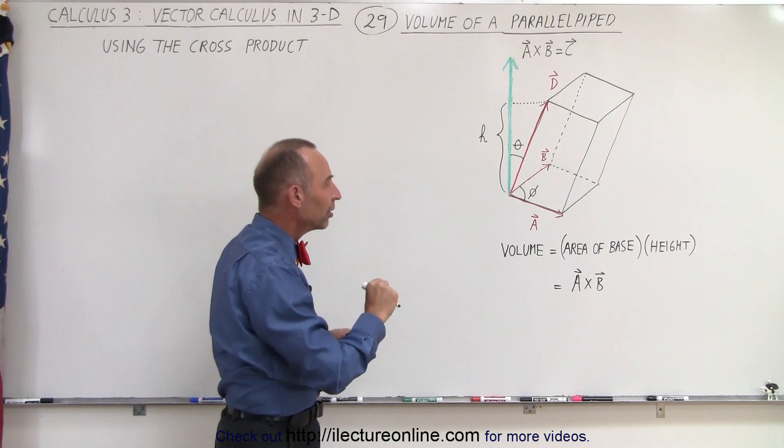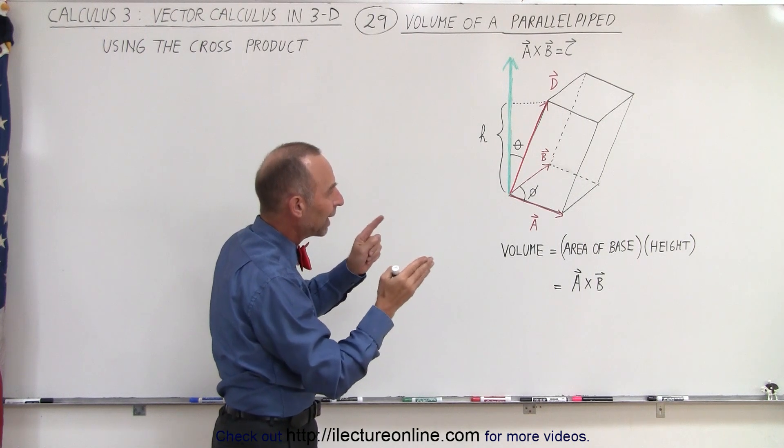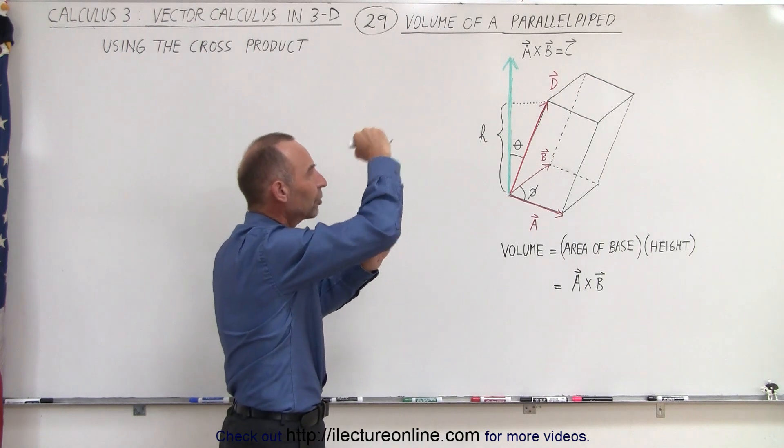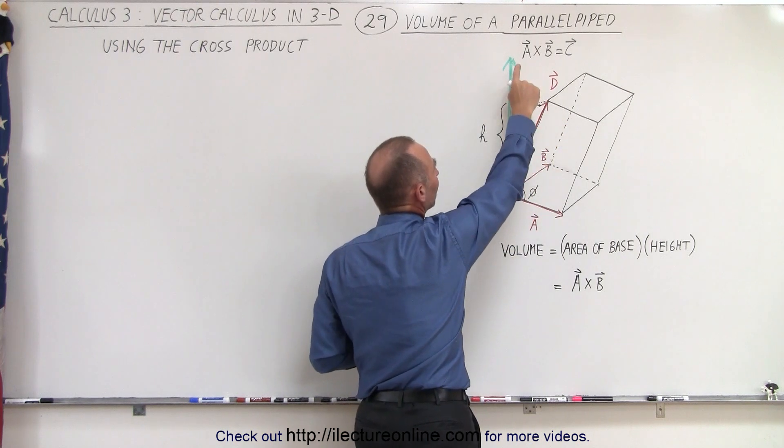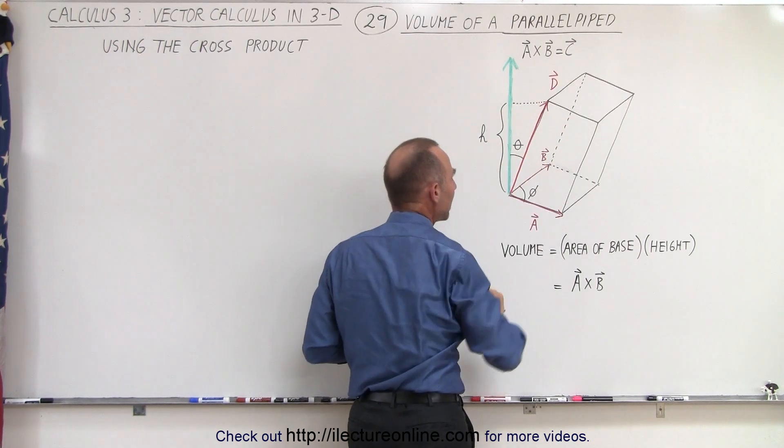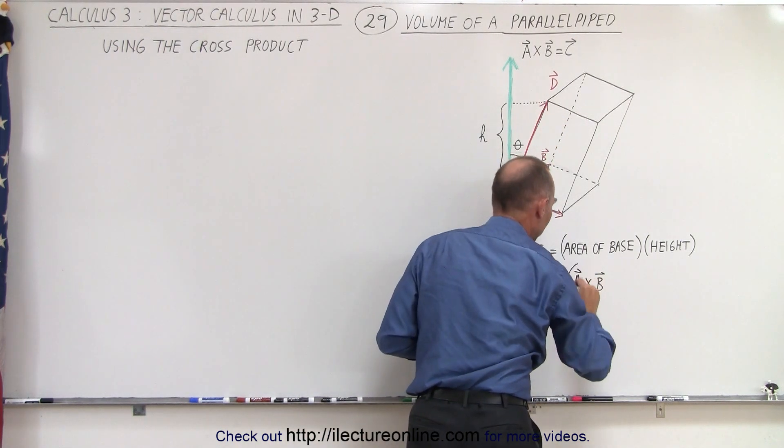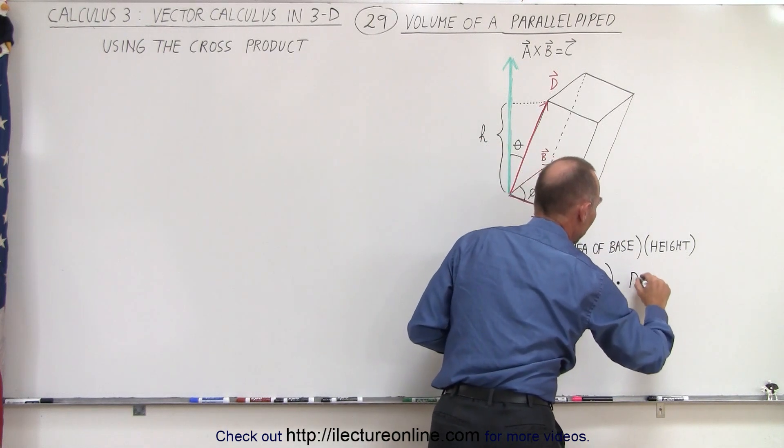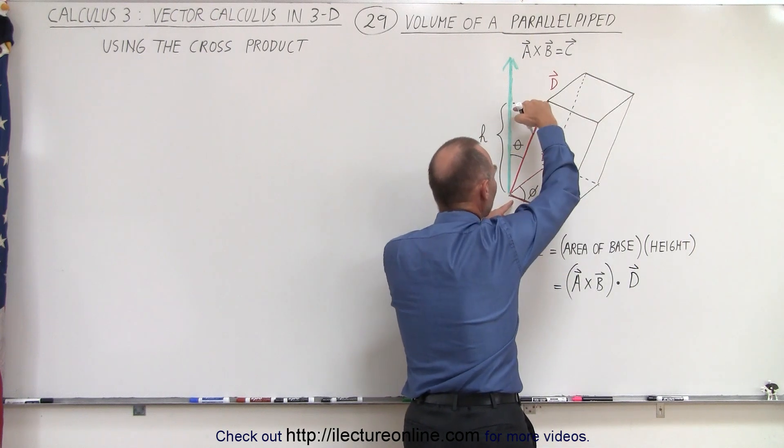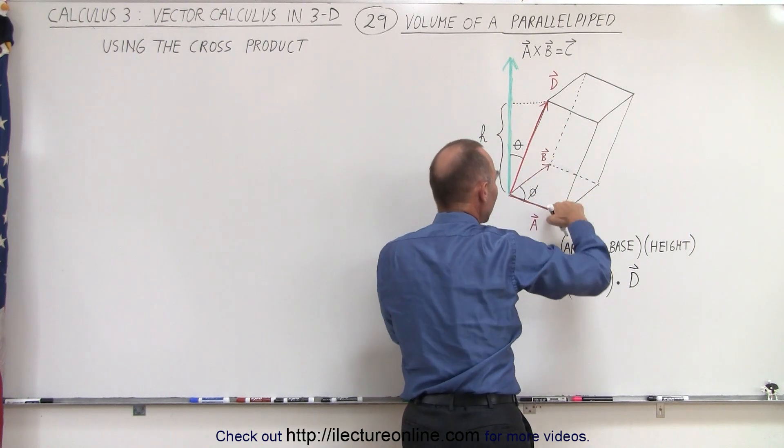And then to find the volume, we have to multiply the area of that base times the vertical height, which is the projection of D onto C. So since C is the cross product of A and B, we can then say that this can then be dotted with the vector D, which will then give us the vertical height, and then if we multiply that times the base, we get the volume.